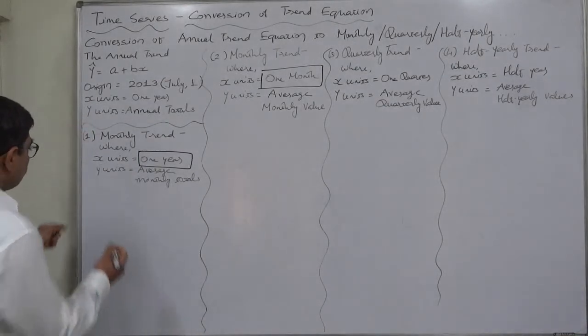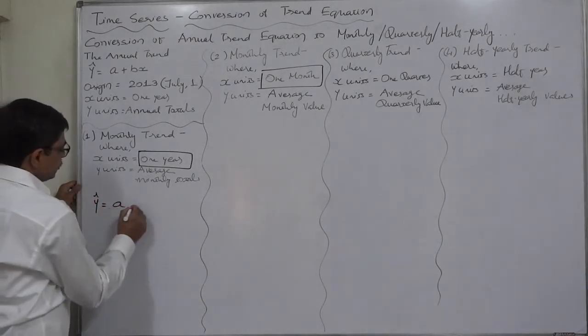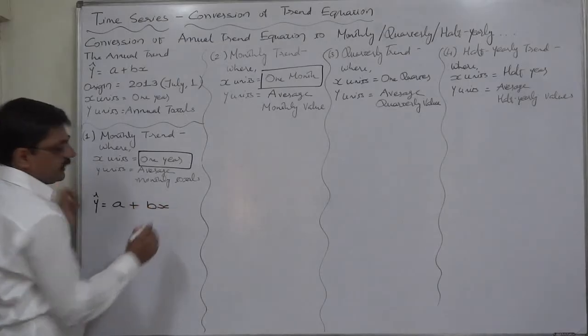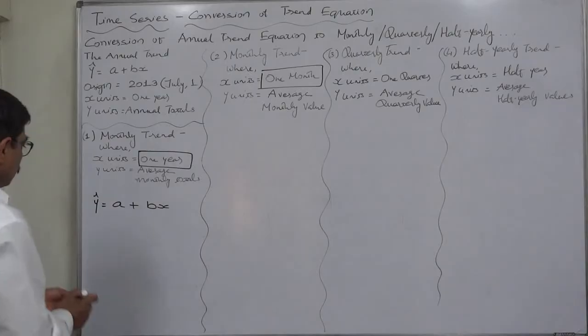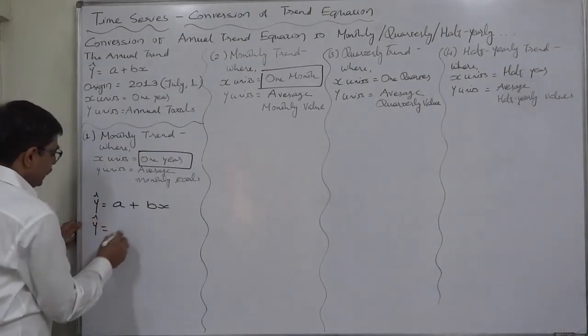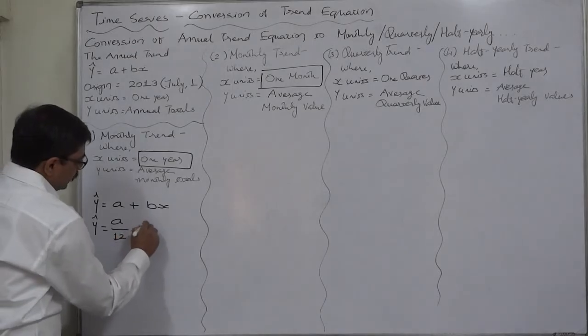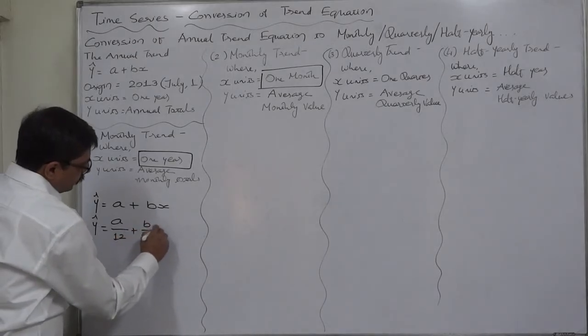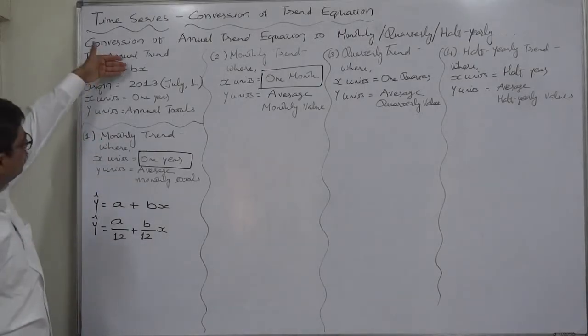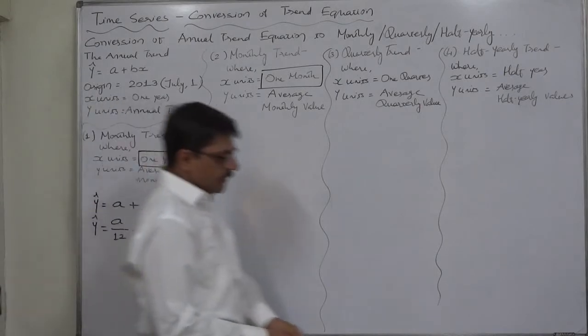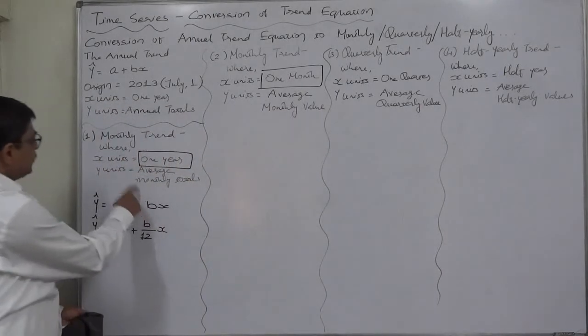Because we want trend values of y on monthly basis, what should we do? That's very simple. Yearly is a plus bx, and we know that a year is made up of 12 months, so the monthly trend will be a divided by 12 plus b divided by 12 times x.